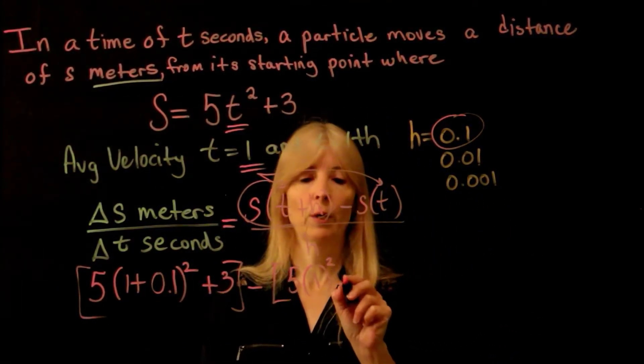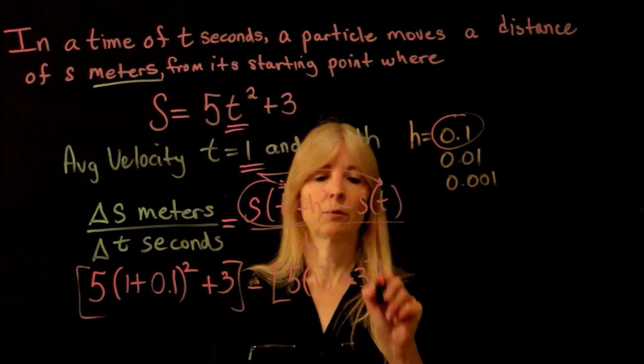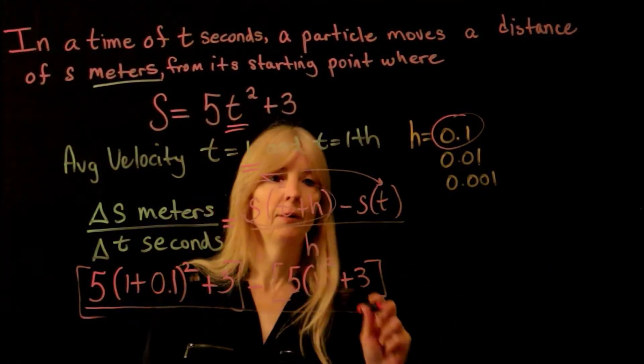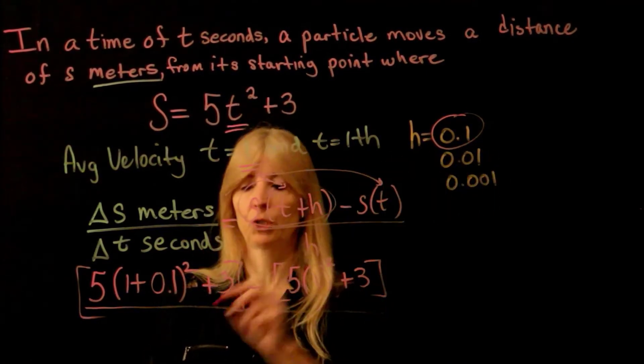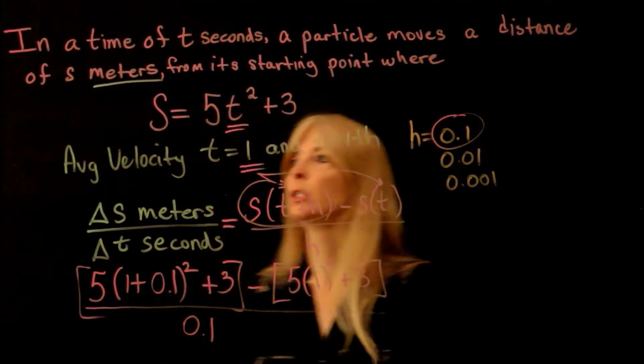So 1 squared plus 3, and then all divided by my h, which I said I'm going to do that first one, which is 0.1.